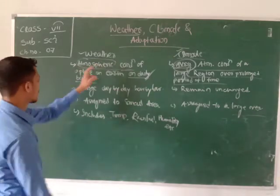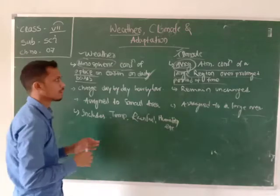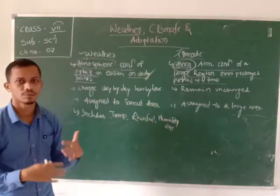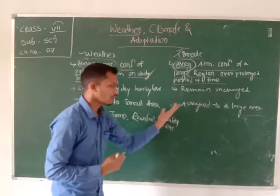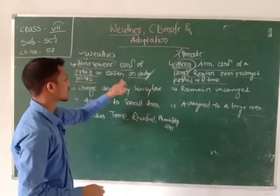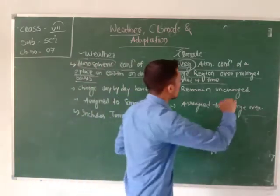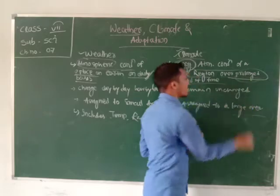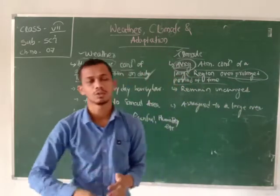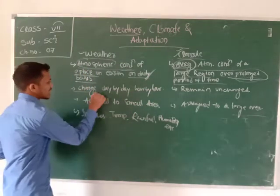While weather deals with a small place — that may be a city, a district, or a state — in the case of climate we go for a larger region, maybe a whole country. Climate works over a long period of time, maybe 20 or 30 years, and it will change only after that long period.